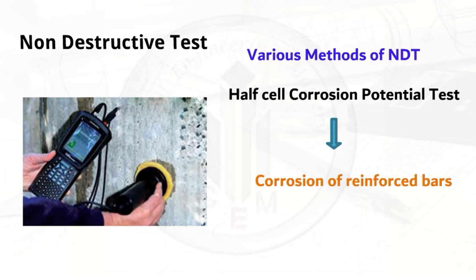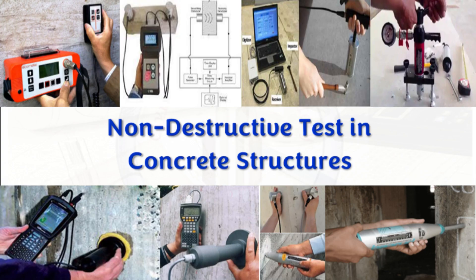It is important to note that no single NDT method can provide a definitive diagnosis of corrosion. However, by using a combination of NDT methods, it is possible to get a good understanding of the extent of corrosion damage and the need for repairs.